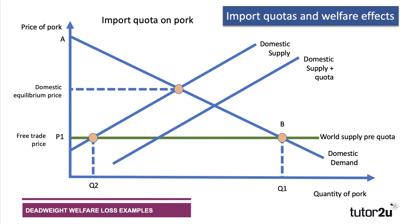With a quota, you're saying we allow domestic supply plus the quota. So the supply curve shifts out to the right because we're adding a given quantity to the domestic supply curve — that's why you draw it as domestic supply plus quota. The bigger the quota, the further that curve shifts right. If you have a zero quota — a ban effectively — then the domestic supply curve is all that can be supplied to the market.